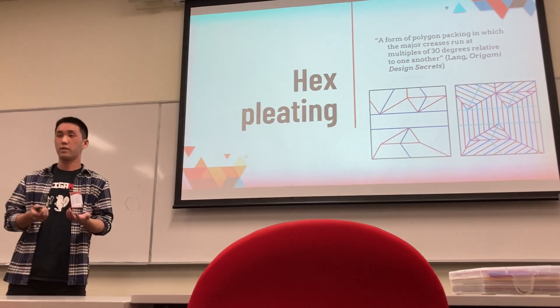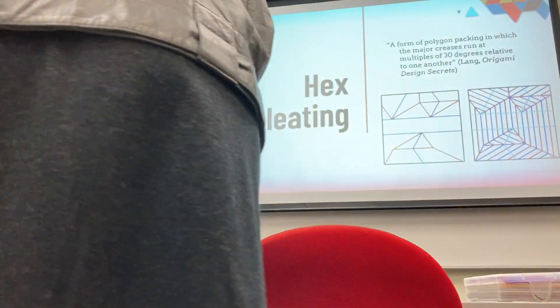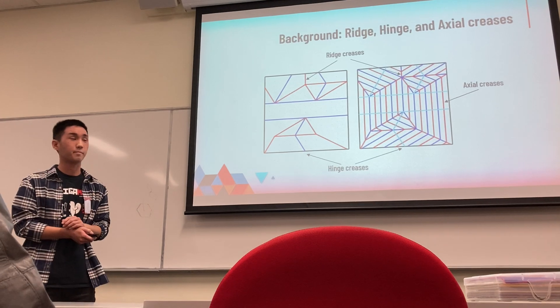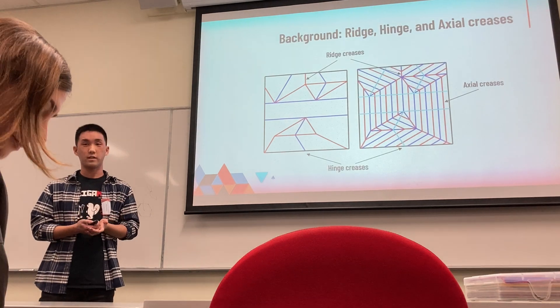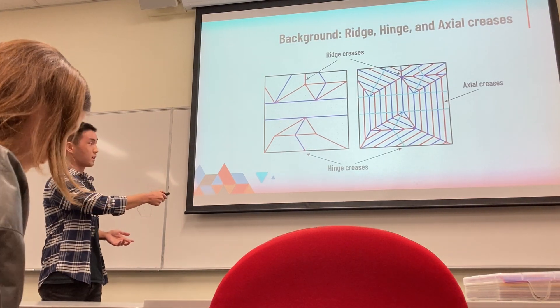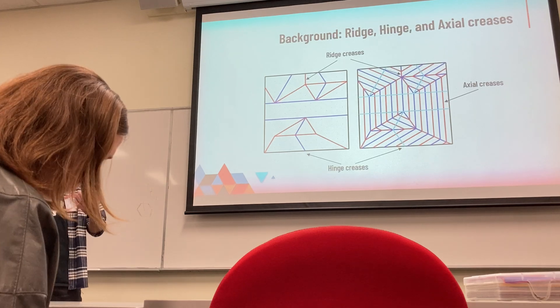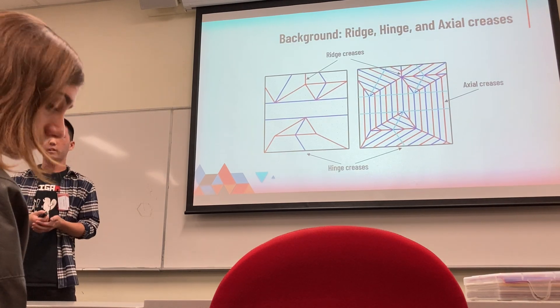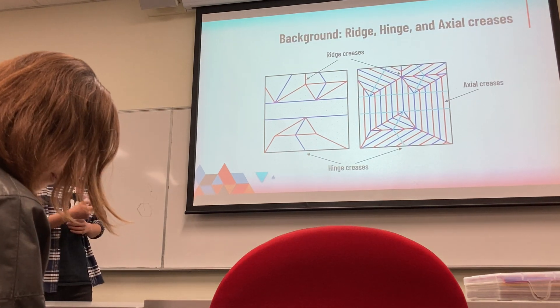We apply the creases onto an isometric grid of equilateral triangles, where creases lie either on the grid lines or on the angle bisectors of the grid lines, ensuring symmetry. In uniaxial hex pleating, all creases can be categorized into three types: ridge, hinge, and axial creases. The hinge creases outline the polygons, each representing a flap or a river in the tree. The axial creases lie along the axis when folded flat and are parallel to the hinges. Ridge creases are the space-makers into each polygon.